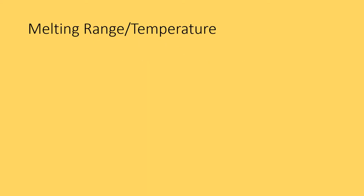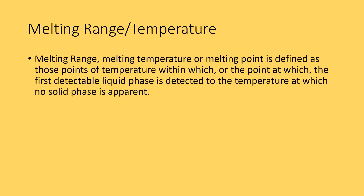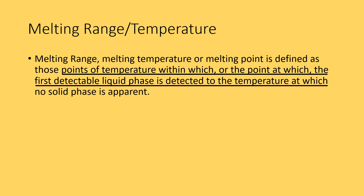Let us see what is melting range or temperature. Melting range, melting temperature, or melting point is defined as those points of temperature from where the first detectable liquid phase is detected to the temperature at which no solid phase is apparent. Melting point is the point at which the material starts to show melting, and range is when all material is melted and transformed into liquid phase.